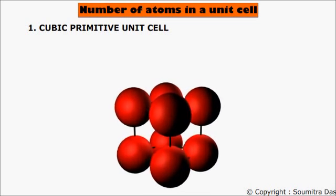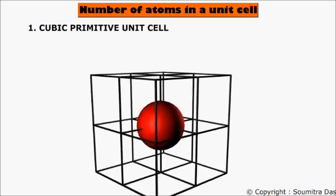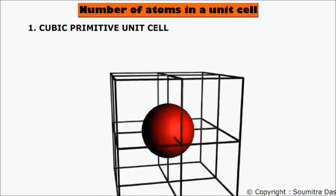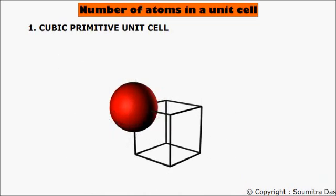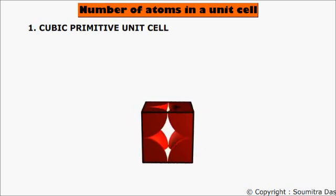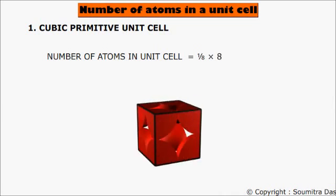It looks like this. Take one corner atom. We can see that the corner atom is equally shared by eight unit cells. Therefore, the volume available for a unit cell is equal to one eighth of the volume of a corner atom. There are eight corner atoms. Therefore, the number of atoms in a unit cell equals one eighth multiplied by eight, which is equal to one atom per unit cell.